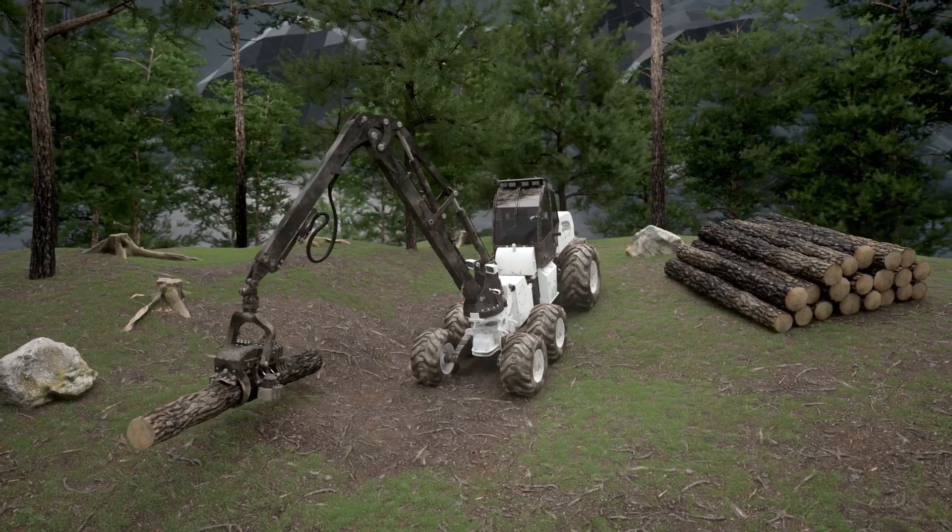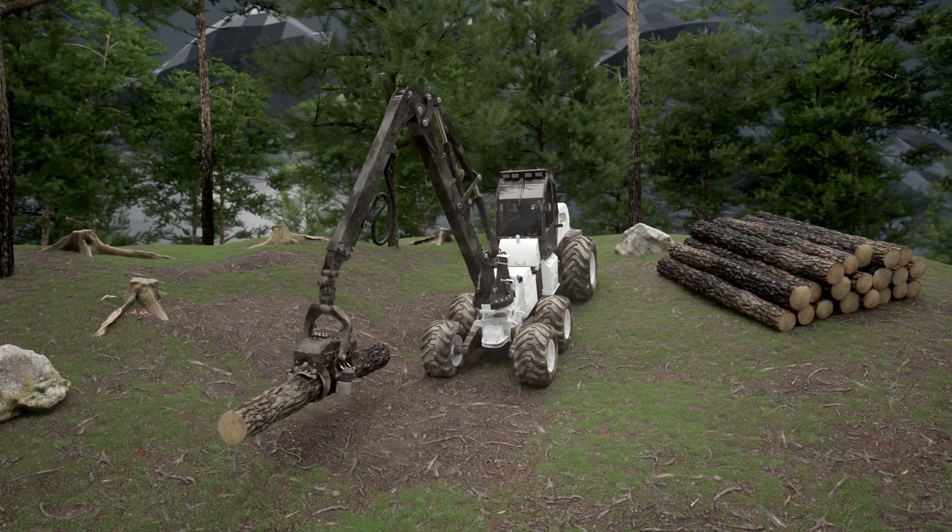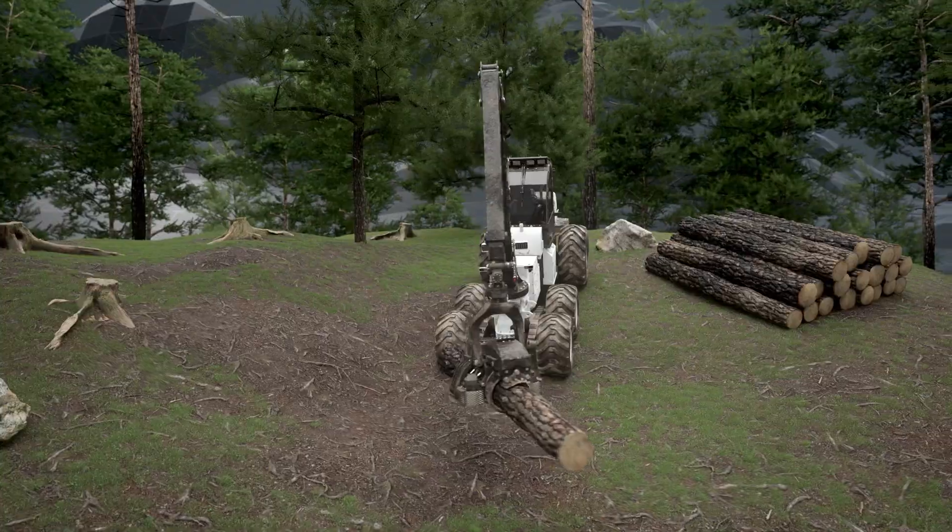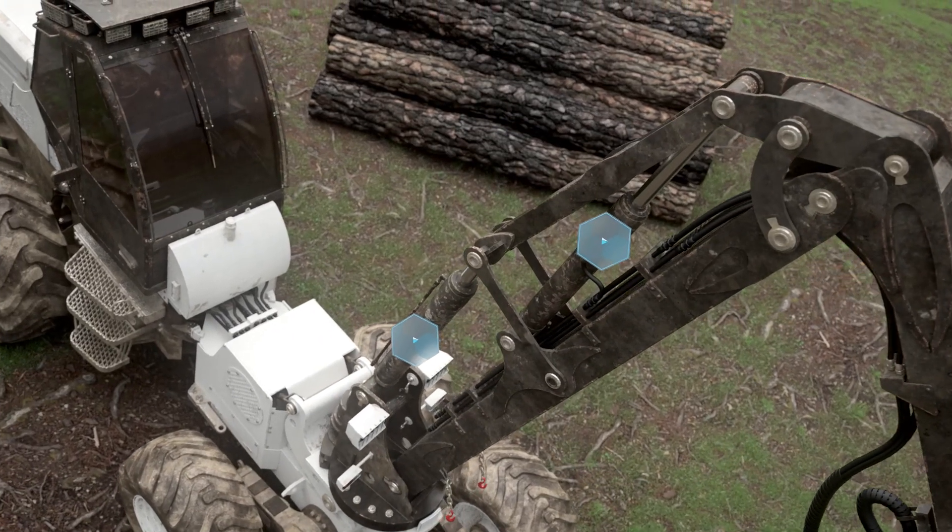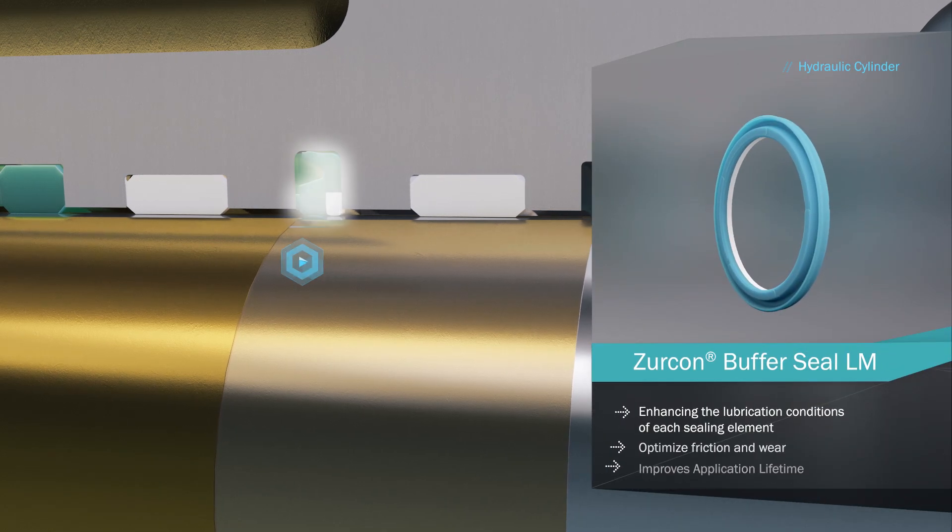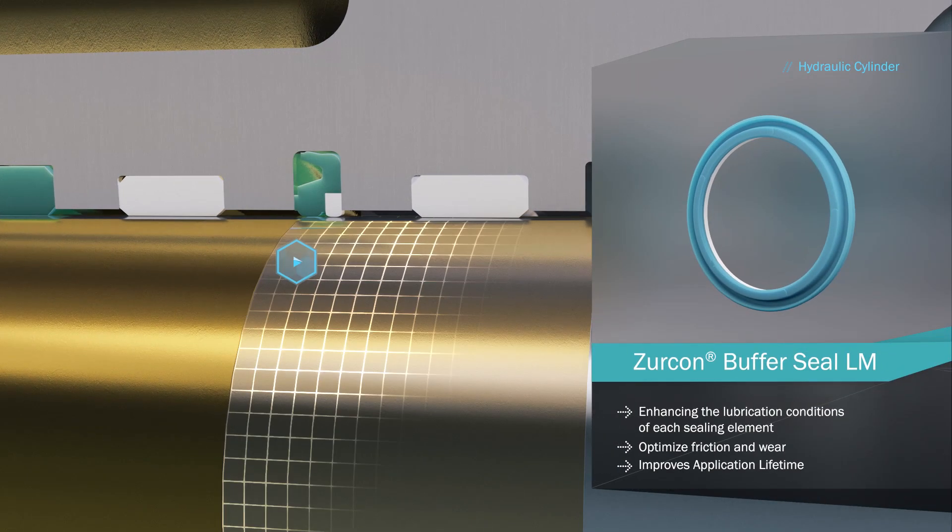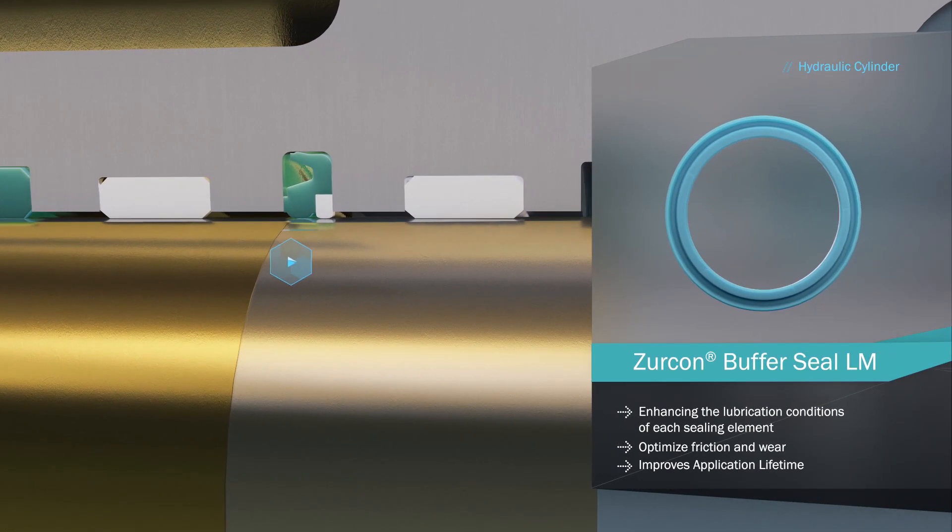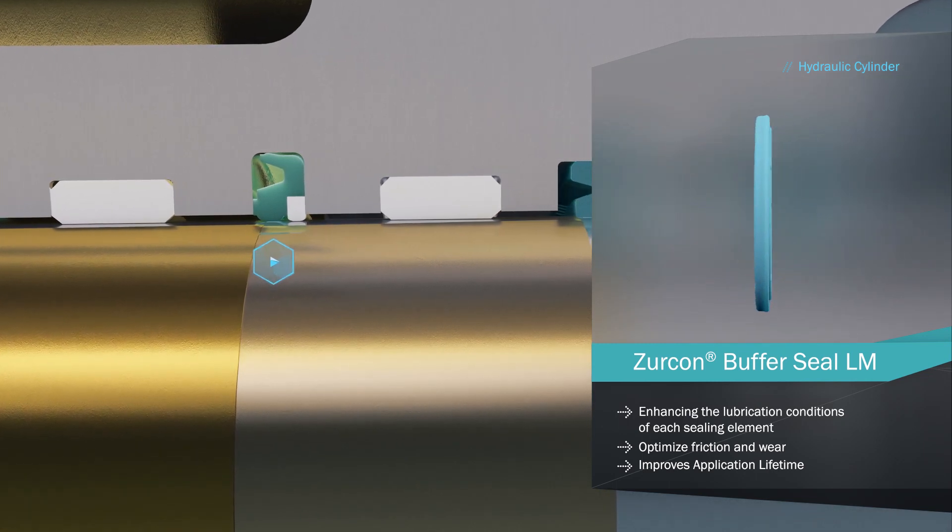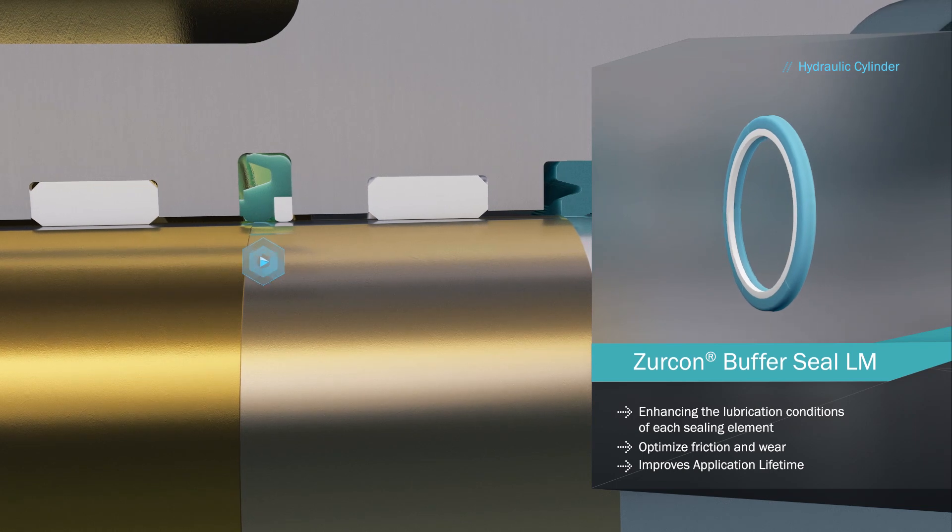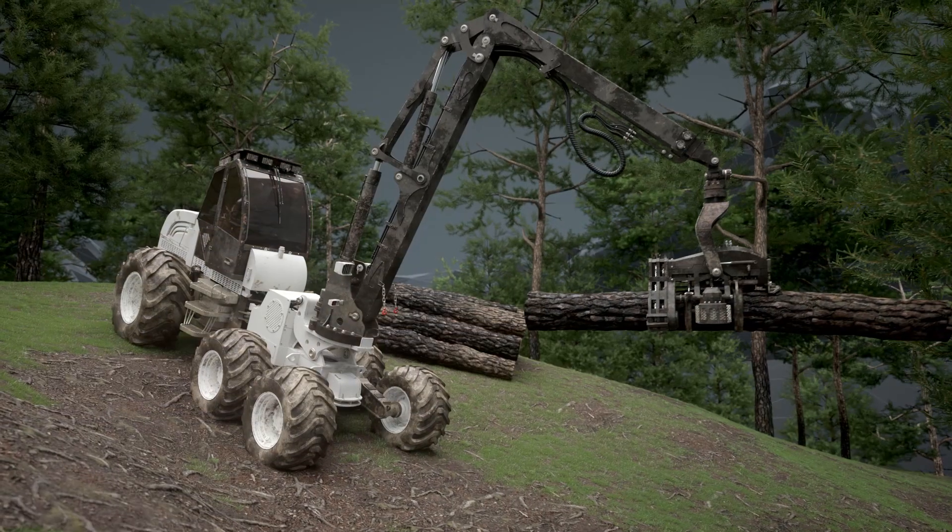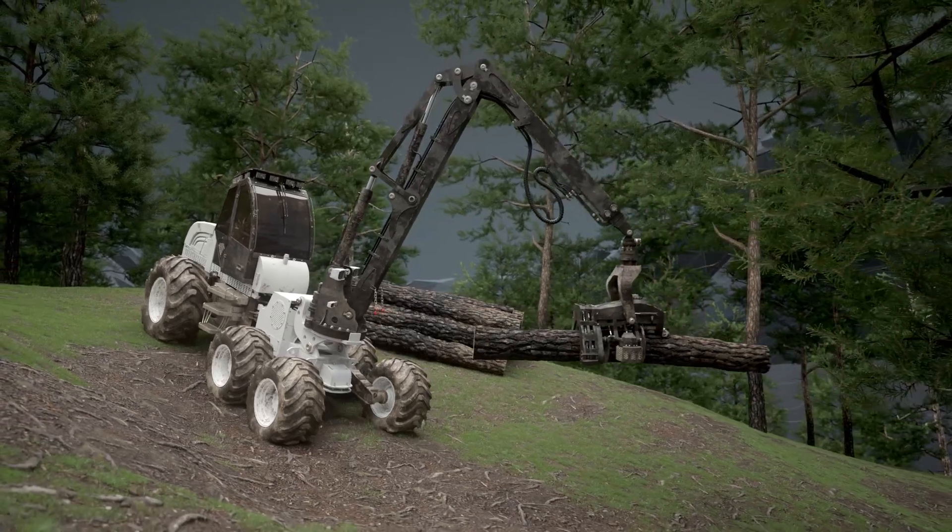A thorough understanding of lubrication leads to solutions that reduce friction further and improve whole system performance. Within wheel harvesters, innovative seals such as Zircon Buffer Seal LM use these principles to enhance the lubrication conditions of each element within the sealing system. Every component can act together to optimize friction and wear characteristics, radically increasing application lifetime and reliability.